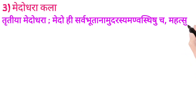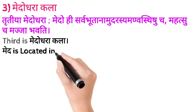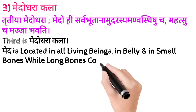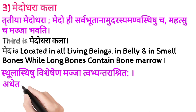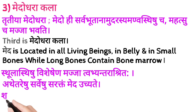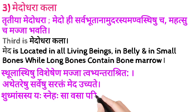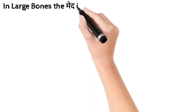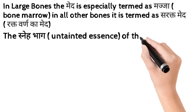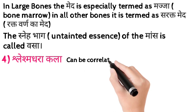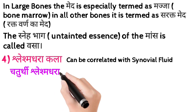Here is our third Kala, which is Medo Dharakala. Its shloka — 'Tritya medodhara, Medo hi sarvabhuta naam, Udharastha, Anvahastishu cha Mahatsu cha Majjabhavati' — says Med is located in all living beings in the belly and in small bones, while long bones contain bone marrow. In large bones it is termed as Majja, meaning bone marrow, while in all other bones it is termed as sarakta medh. The untainted essence of mass is called Basa.